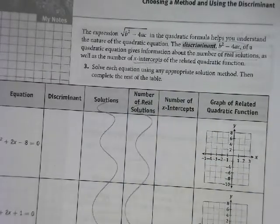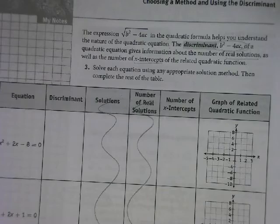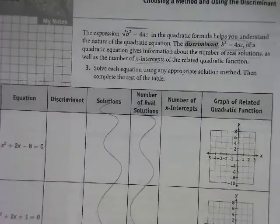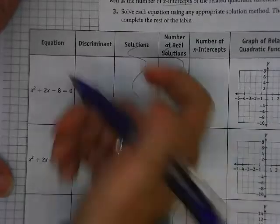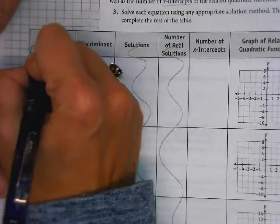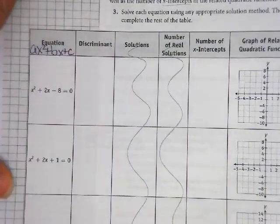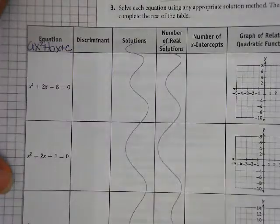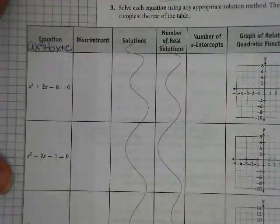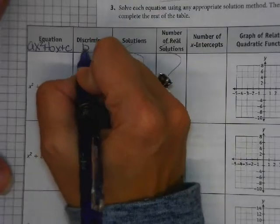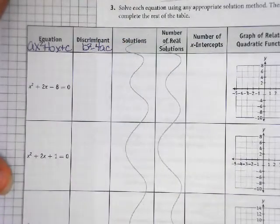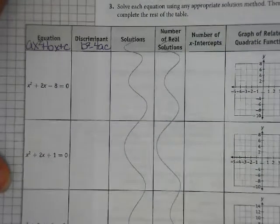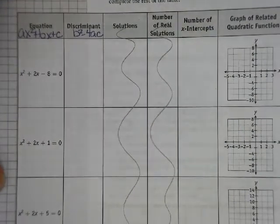We only need to figure out how many x-intercepts there are. I want you to keep in mind when we look at this table, our equation, we always want things in the standard form, ax squared plus bx plus c, because you're going to need to be able to identify a, b, and c. Because when we do our discriminant, we're going to say b squared minus 4ac. And that's going to, and then we'll decide how many intercepts there are.